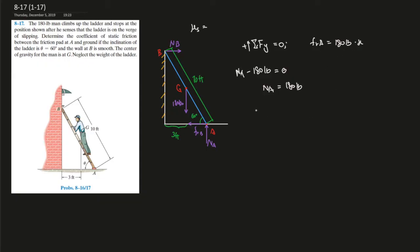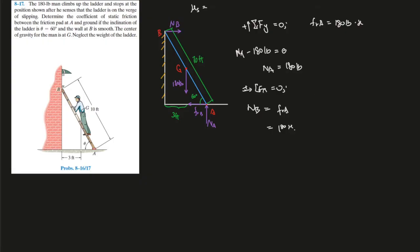And now we can use the sum of the forces in the X direction equals zero. That's pretty easy, and that would give us NB equals FRA, which is FR equals 180 mu.